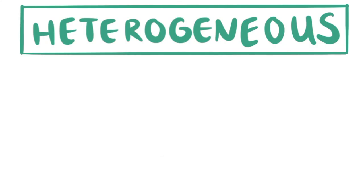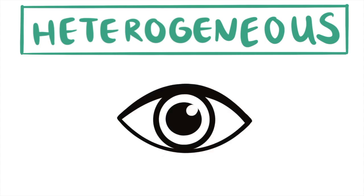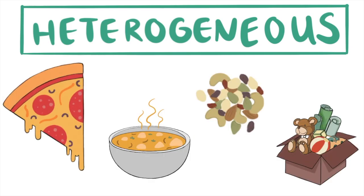Heterogeneous mixtures are those where you can see the separate substances. Examples of these are our pizza, soup, trail mix, and toy box.